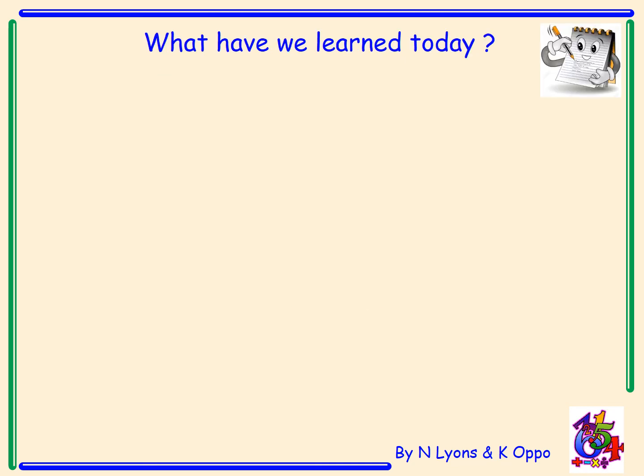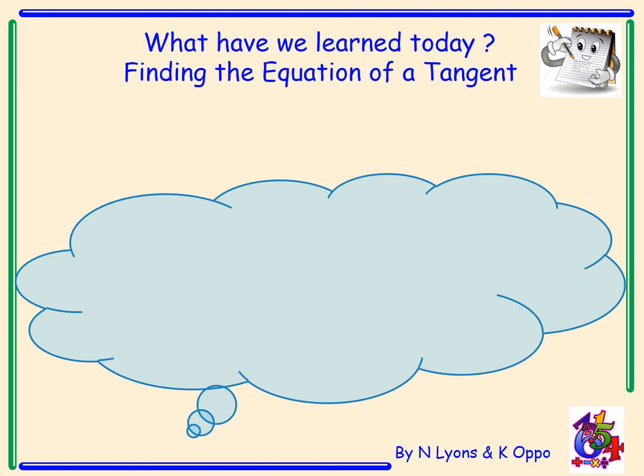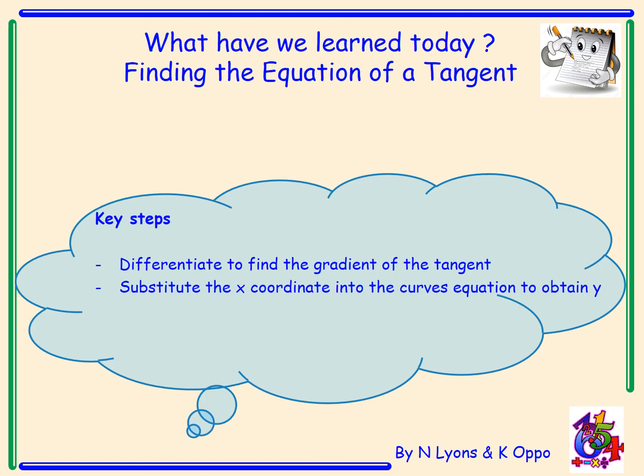So what have we learned today? Today we've found out how to find the equation of a tangent. The key steps are: differentiating to find the gradient of the tangent, substituting the x coordinate into the curve's equation to find y, and then using y minus b equals m bracket x minus a.